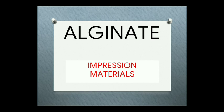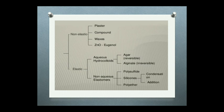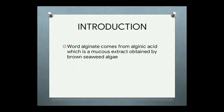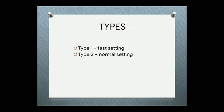Welcome to this lesson on alginate. Impression materials are of two types: non-elastic and elastic. Non-elastic includes plaster, compound, waxes, and zinc oxide. Elastic includes aqueous hydrocolloids and non-aqueous elastomers. In aqueous hydrocolloids there are agar and alginate — agar is reversible and alginate is irreversible. Based on setting time, alginate is two types: Type 1 is fast setting and Type 2 is normal setting.